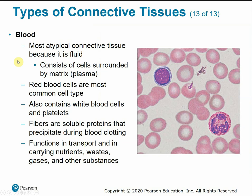Blood is an atypical connective tissue because it is a fluid. It's still technically a tissue because different types of cells work together to perform a common function. The extracellular matrix is the plasma, and we have red blood cells and white blood cells. Red blood cells are the most common type; white blood cells function in the immune system and are less numerous. The fiber portion for blood tissue consists of soluble proteins that precipitate during blood clotting, forming blood clots when there's an injury to a blood vessel. Functions of blood include transporting nutrients, waste, gases, and other substances like hormones.